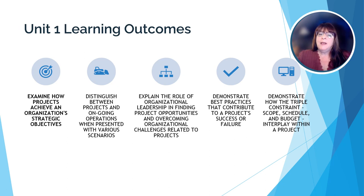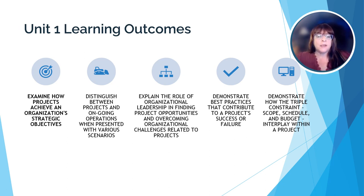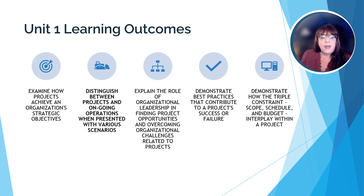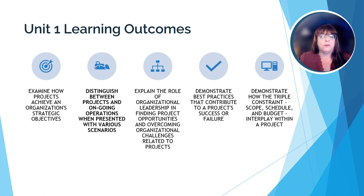Before we get started, let's review the learning outcomes for this unit. These are the things that you should know by the time you finish this unit. Our first learning outcome is to examine how projects achieve an organization's strategic objectives — every project an organization undertakes should be directly tied to the organization's strategic objectives. Next, we're going to distinguish between projects and ongoing operations when presented with various scenarios. Many people are confused about what a project is and how it's different from regular operations, and we're going to look at that in Unit 1.